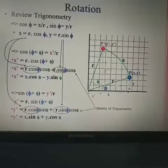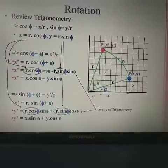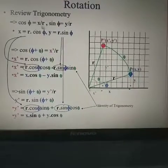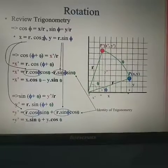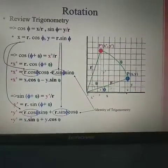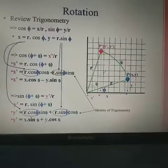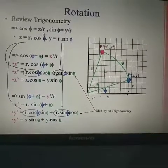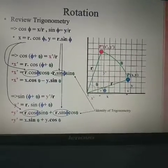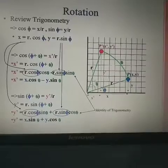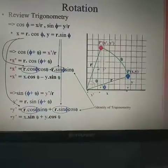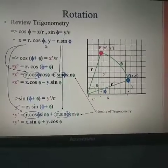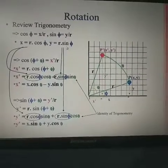We have the original angle phi, and after rotation the added angle is represented by theta. For the trigonometry equations: cos phi equals x divided by r (base divided by hypotenuse for this triangle), and sin phi equals y divided by r. From these equations we can easily calculate x = r·cos(phi) and y = r·sin(phi).